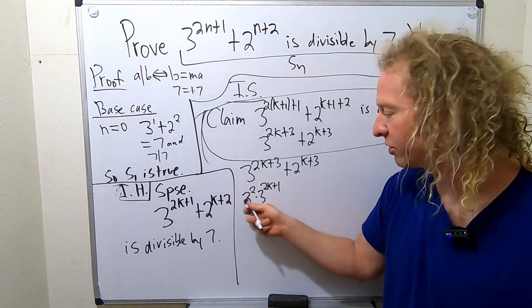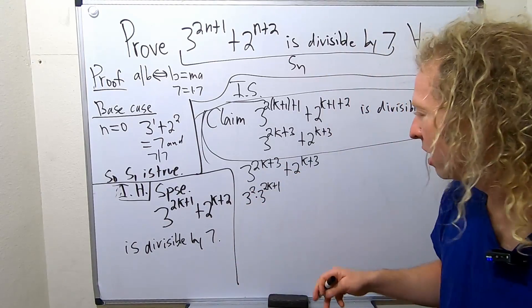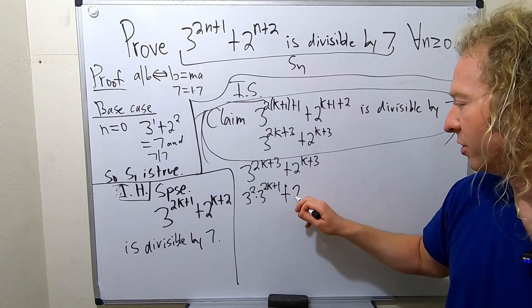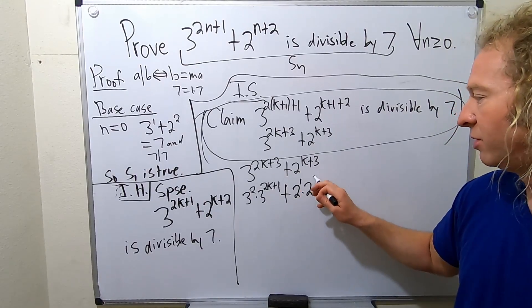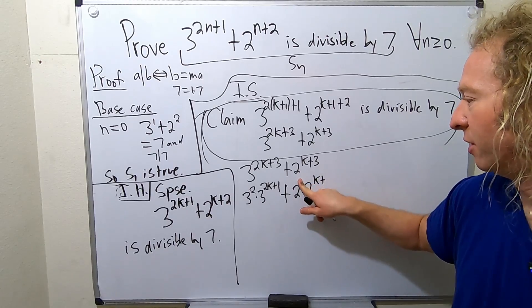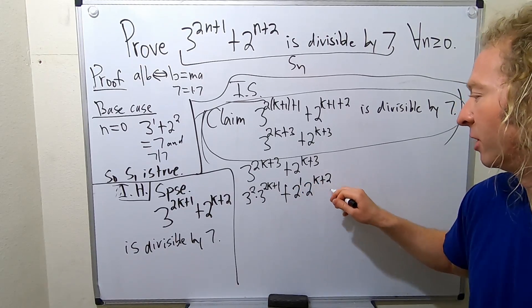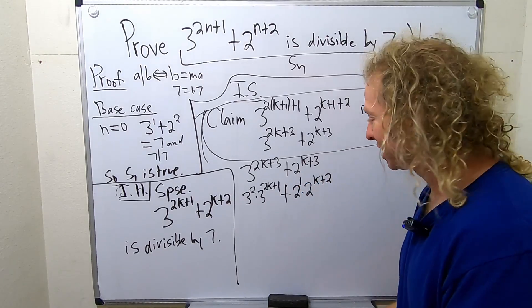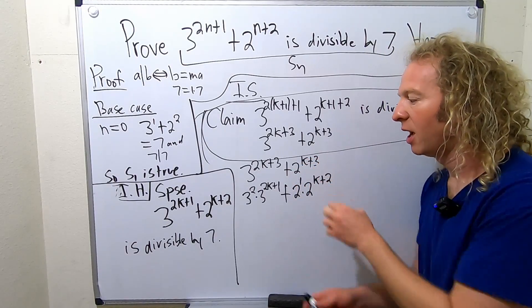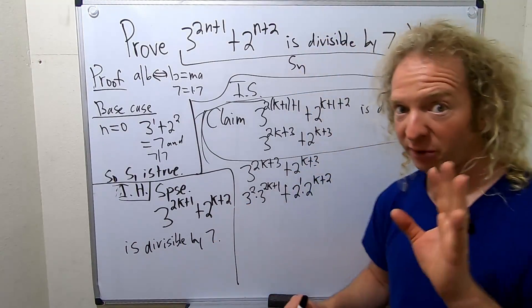2 plus 1 is 3. Because they're the same base, you add exponents. Plus, here we just need a 2, so I've got to pull out a 2 here. So 2 to the 1 times 2 to the k plus 2. Because 1 plus 2 is 3, and we want a 2 here. So a little bit different.